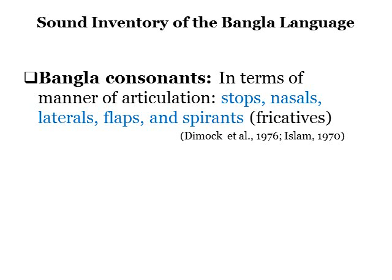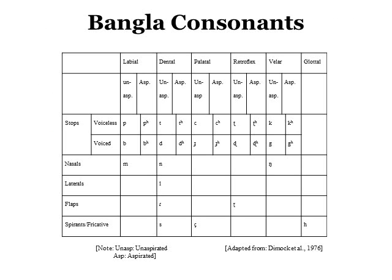Now we will take a look at the sound inventory of Bangla. In terms of manner of articulation, Bangla consonants can be stops, nasals, laterals, flaps, and spirants. This is a chart of Bangla consonants from Dimartatel 1976. As we can see, the aspirated and unaspirated stops in Bangla are in contrastive distribution, because aspiration in Bangla is a phonemic feature. Bangla has three spirants — sa, sha, and ha — all of which are voiceless, and Bangla also has two flaps.